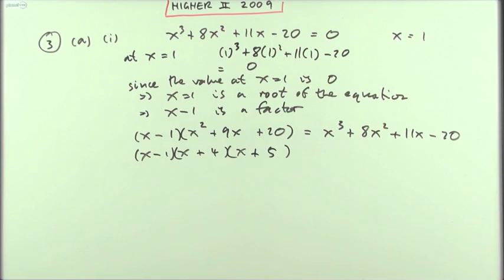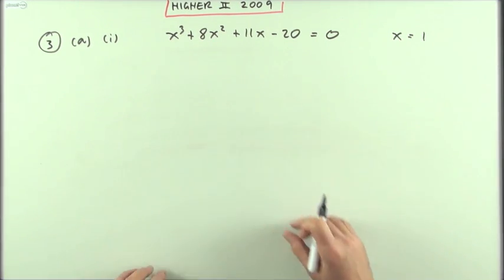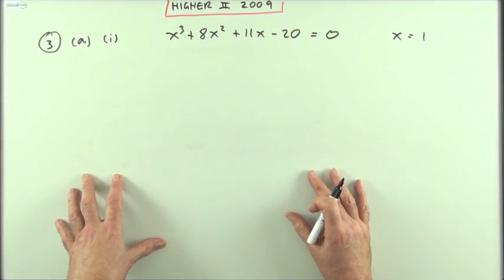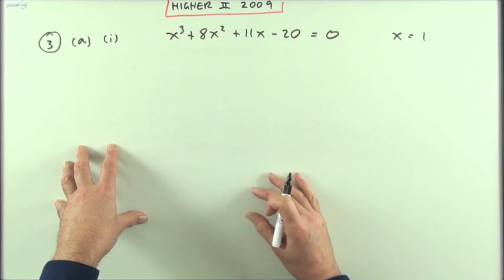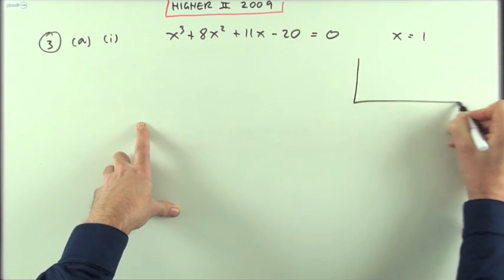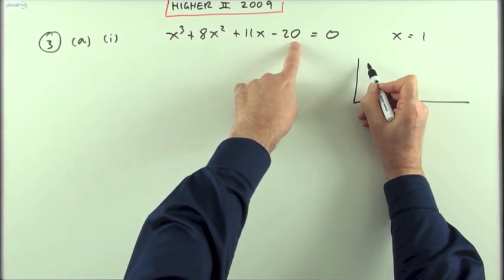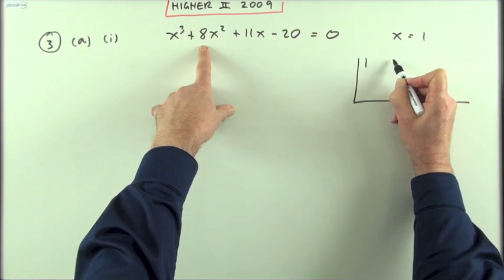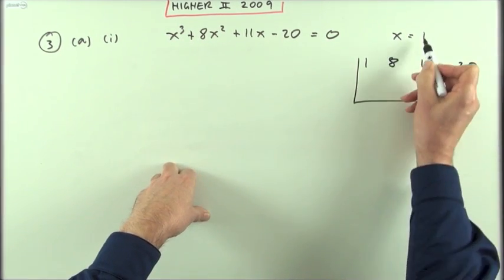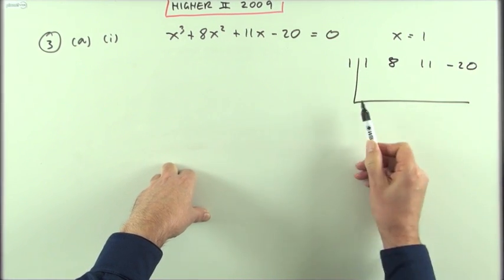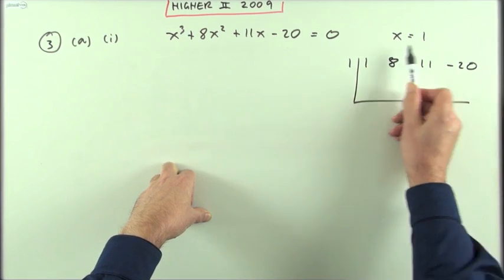The other way would be to employ synthetic division. This is the way you'd probably be going about it; you just have to be careful about your statements because it doesn't say show it's a factor hence factorize. I could put down my synthetic division table - there's the four coefficients that I need: 1, 8, 11, -20. Putting 1 into it means I'm going to use this table the way you would use it for an evaluation.